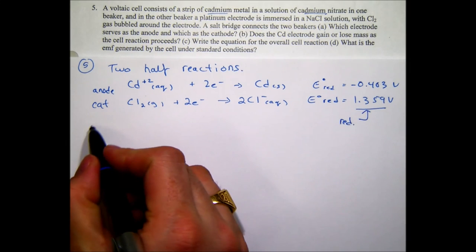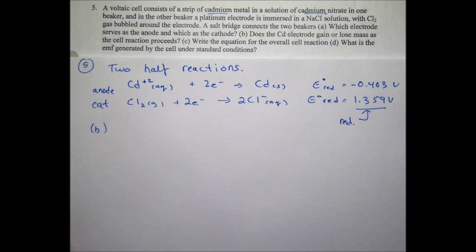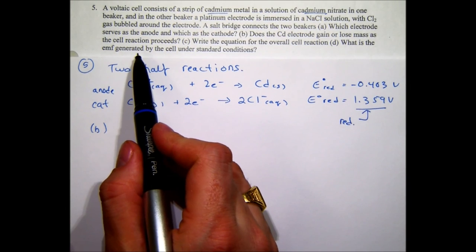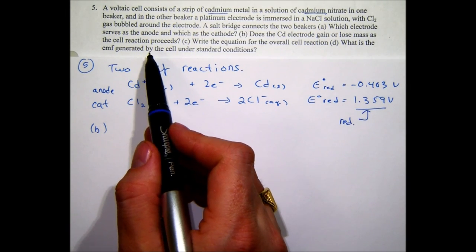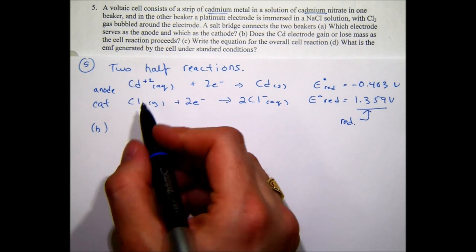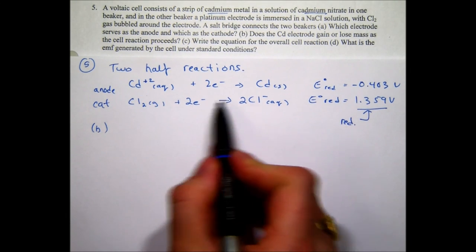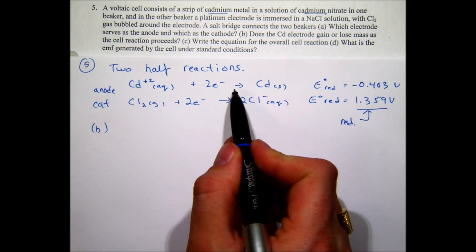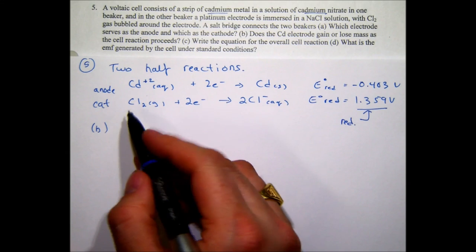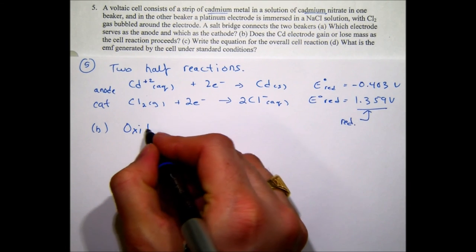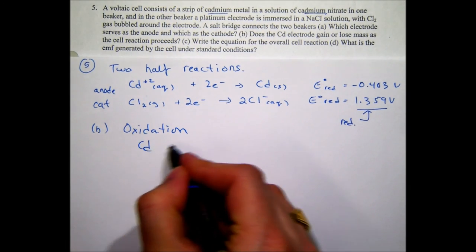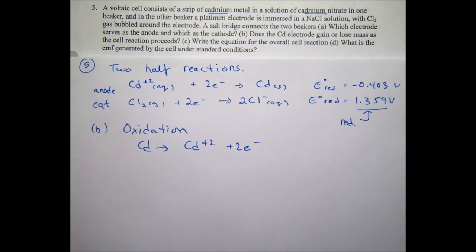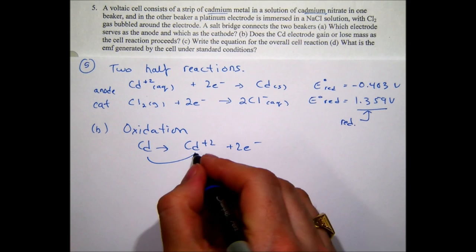Since cadmium is undergoing oxidation (it's the anode), it goes from Cd(s) → Cd²⁺ + 2e⁻. This means the cadmium electrode physically loses mass as the metal oxidizes into Cd²⁺ ions that enter the solution.